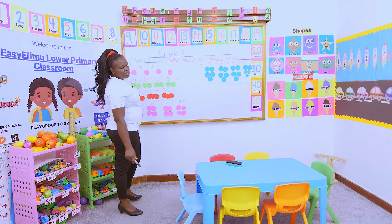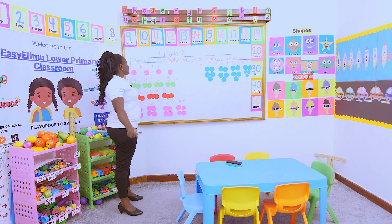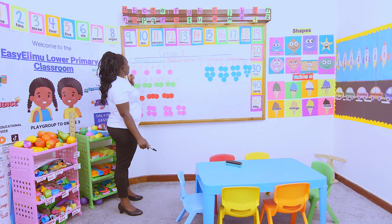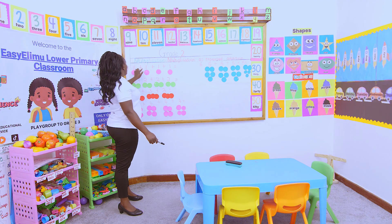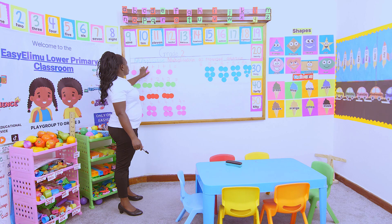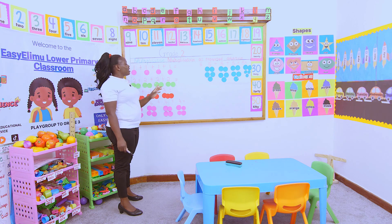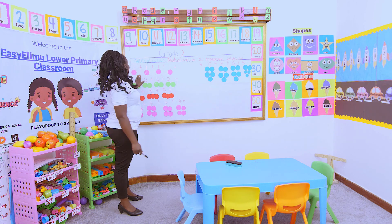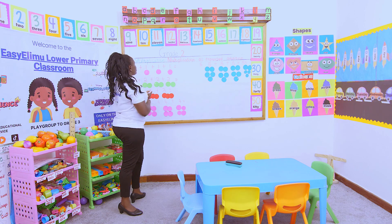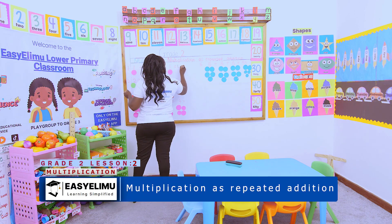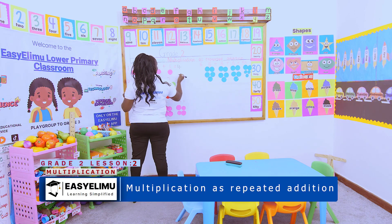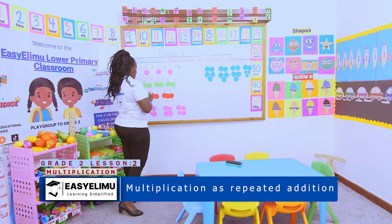Let's go. Who is doing the first one? Yes, Janet? How many times does one appear? One, two, three, four. And what is the sum? The sum again is one, two, three, four. So, the sum is four. Nice!